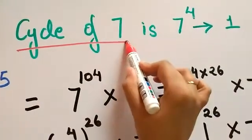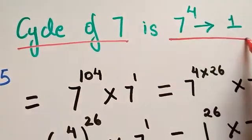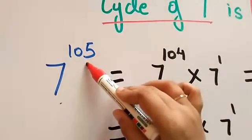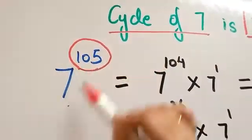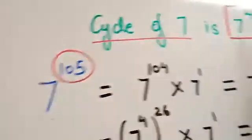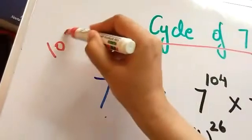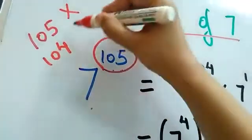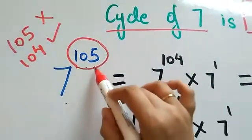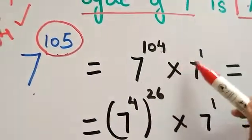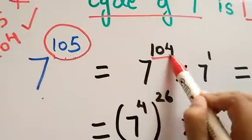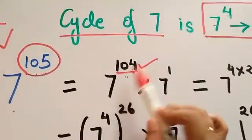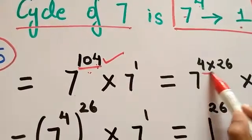Now applying this to 7 raised to the power 105. We need to express 105 as a multiple of 4 plus a remainder. 105 is not divisible by 4, but 104 is — since 104 equals 4 into 26. So we split 7 raised to the power 105 as 7 raised to the power 104 multiplied by 7 raised to the power 1, where 104 equals 4 times 26.